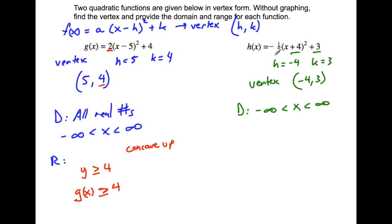Now, in order to find the range, we have to look at this a value. It's negative, so it's concave down. So our range is going to be y is less than or equal to the y component of our vertex, three. In function notation, we write it as h(x) is less than or equal to three.